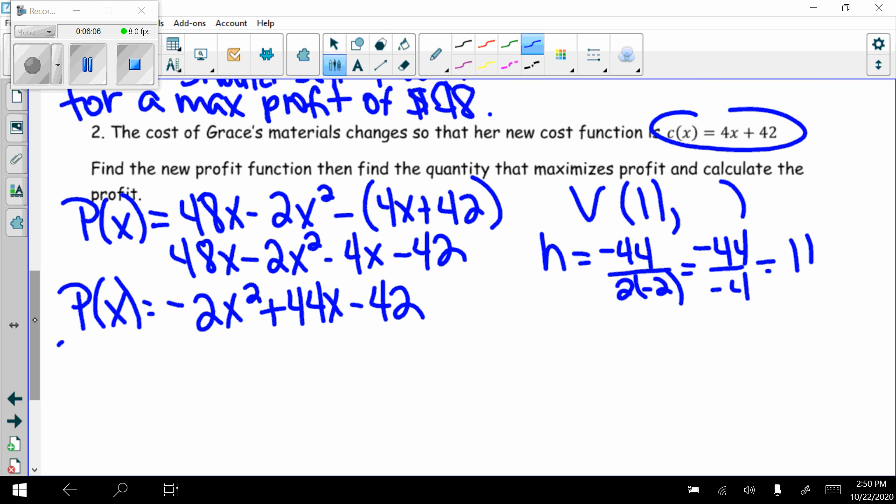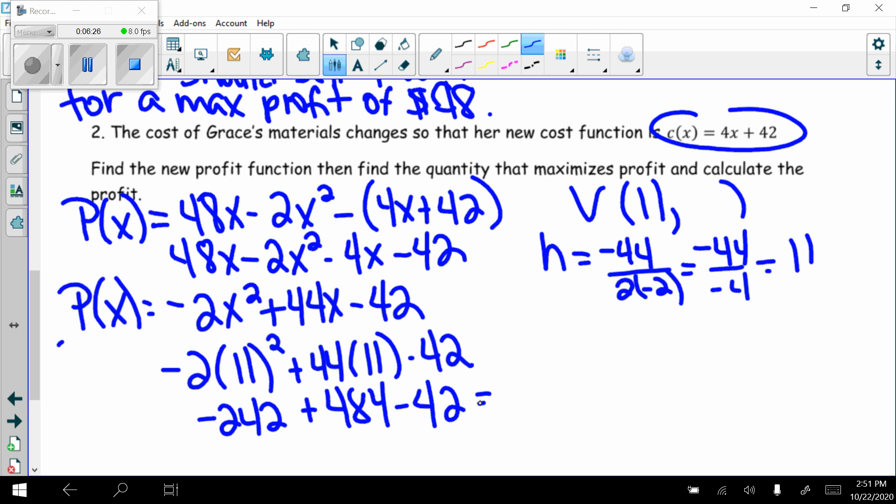I want to know what the profit would be. Plug 11 into this new equation, negative 2 times 11² plus 44 times 11 minus 42. 11² is 121. 121 times negative 2, negative 242. 44 times 11, 484 minus 42. Combine all of those, and I get 200. So my vertex is (11, 200).